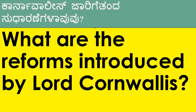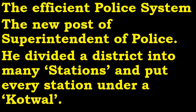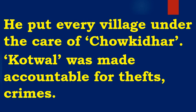These are the reforms introduced by Lord Cornwallis: an efficient police system, the new post of Superintendent of Police, dividing districts into farm stations, appointing Kutwals, putting every village under the care of Chaukidar, and Kutwals were made responsible for crimes.